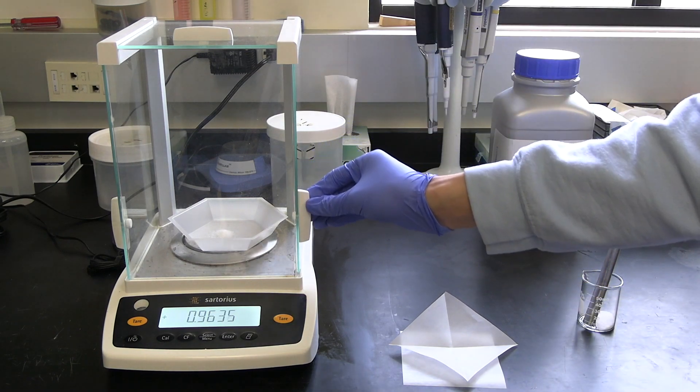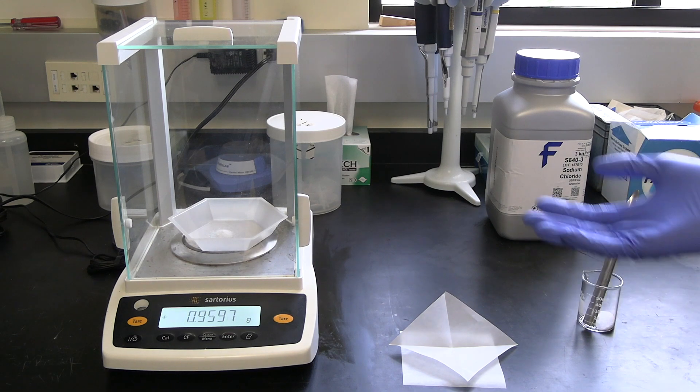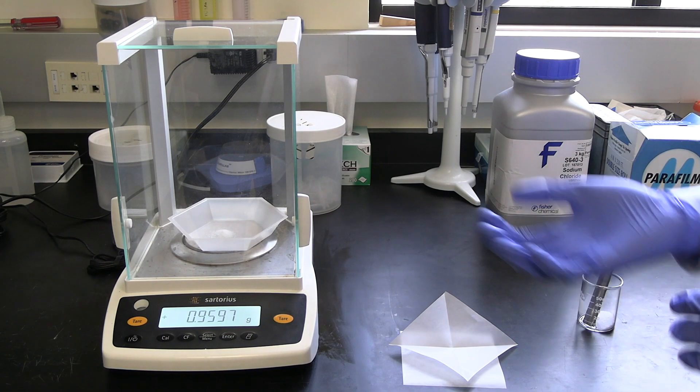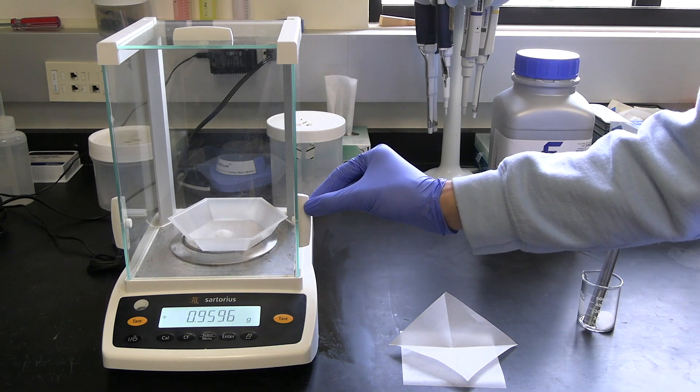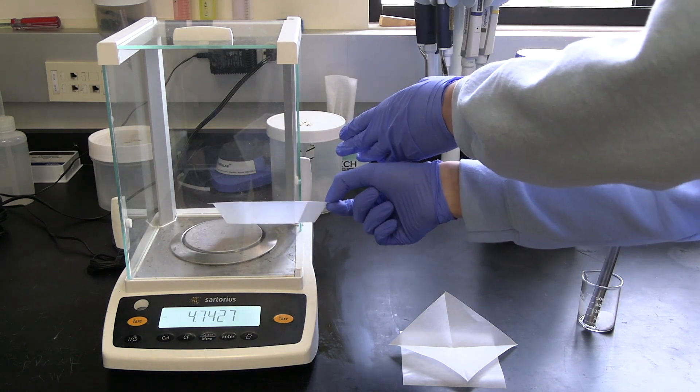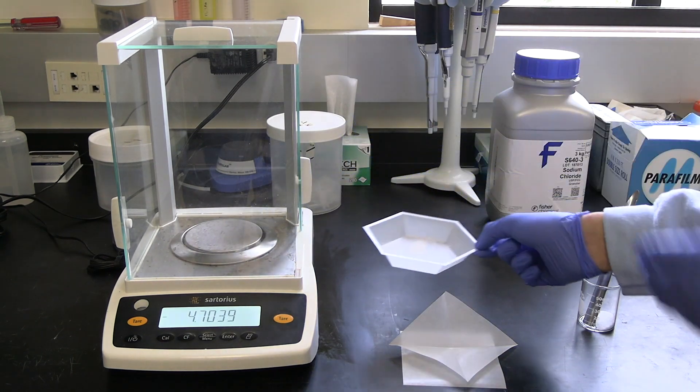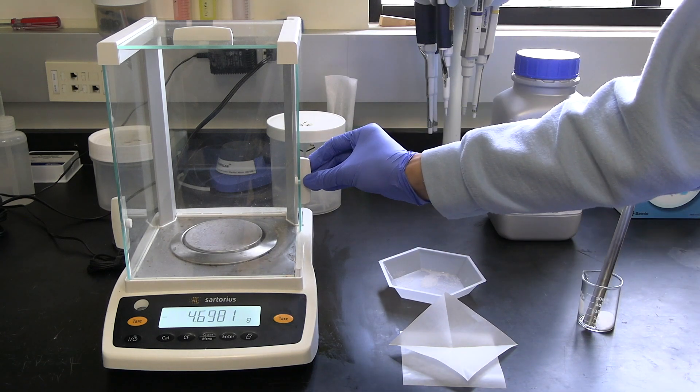And then we're going to close up the machine, wait for our measurement to stabilize, which it looks like it has. So we have about one gram of NaCl. And once you're done weighing, you can just remove your weigh boat and use or dispose of the solid, whichever you want to do.